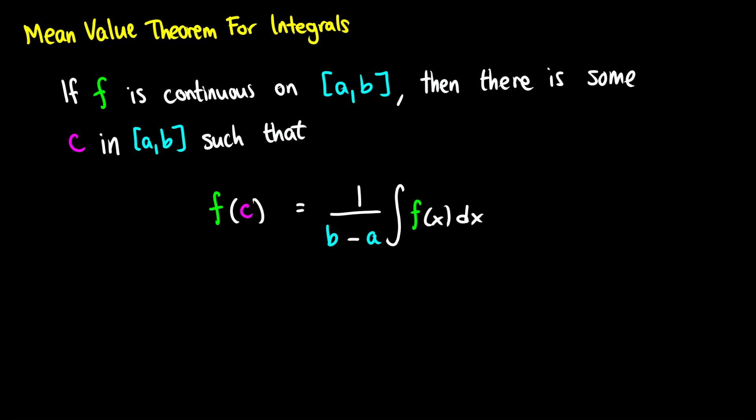This is called the mean value theorem for integrals. If f is continuous on [a, b], then there is some point c in that interval such that f of c is equal to the average of the function — that is, 1 over b minus a times the integral of f of x dx, or just f average. In textbooks you'd typically see this written as f of c equals f average.